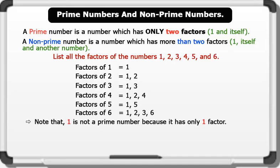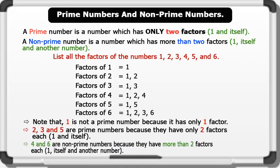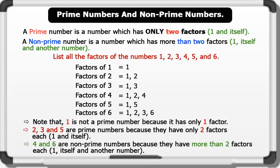Note that 1 is not a prime number because it has only one factor. 2, 3, and 5 are prime numbers because they have only two factors each: 1 and itself. 4 and 6 are non-prime numbers because they have more than two factors each: 1, itself, and another number. That's brilliant.